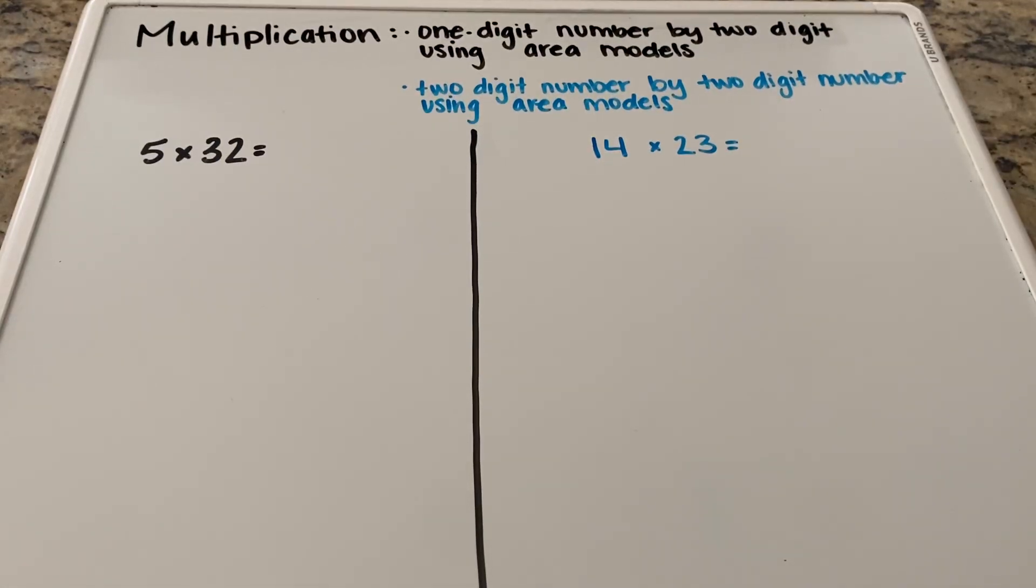Hi everyone and welcome back to Teaching Bee. So in today's lesson we are going to be going over common core multiplication. We're going to do an example with a one-digit number by two-digit using area models and then a two-digit number by two-digit number using area models. So let's go ahead and get started.